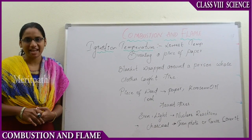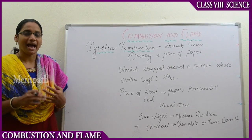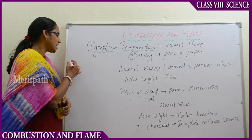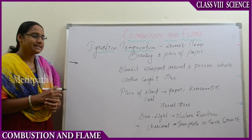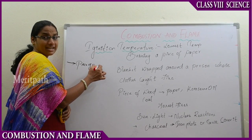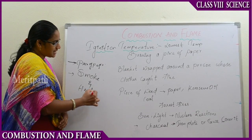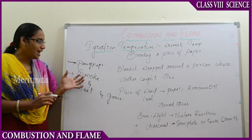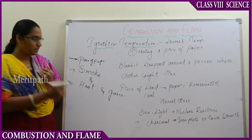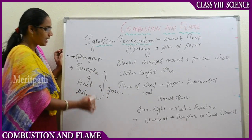Now let us discuss combustion and flame further. Oxygen present in the atmosphere is the essential requirement for combustion. For example, let us take a piece of paper. When you burn it, you get three types of outputs: smoke, heat, and some gases. The ash of the paper, the heat from the flames, the smoke, and the gases — all these are the results of burning a piece of paper.